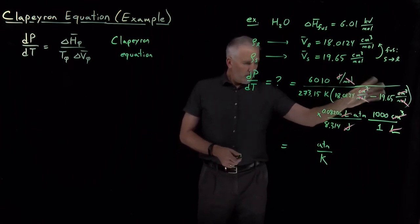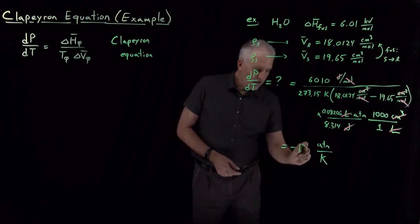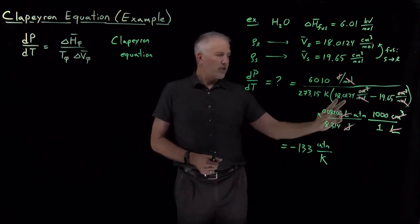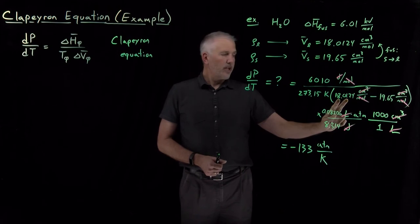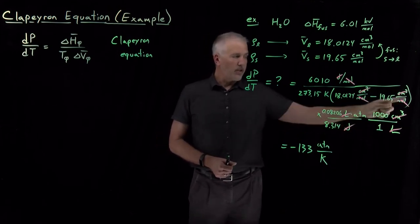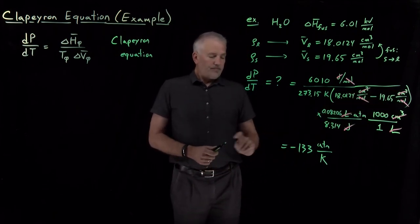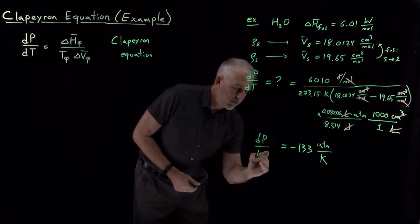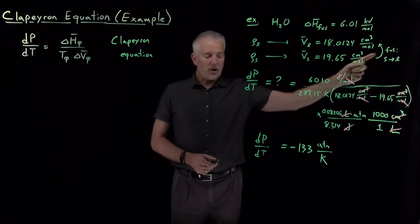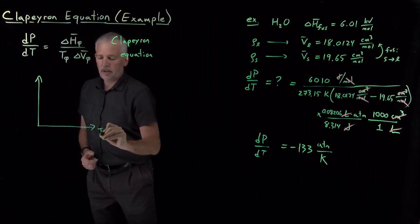If I do the arithmetic of calculating these numbers, what I'll find is that that works out to negative 133. Notice the negative sign came because I took a small volume of the liquid, 18, and I subtracted a larger volume for the solid, 19. This quantity in parentheses is a negative number, which is where that negative sign came from. What we've learned from the Clapeyron equation is the slope of the fusion coexistence curve, the slope of the solid-liquid coexistence line. On a pressure-temperature phase diagram, solid-liquid gas, the line we're talking about is the solid-liquid coexistence line.